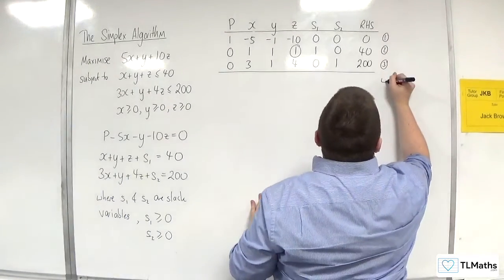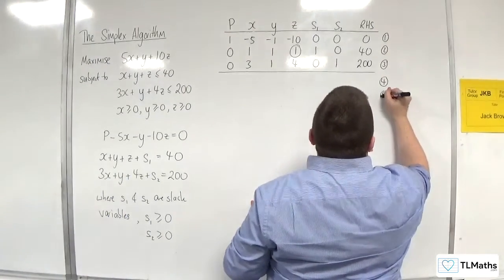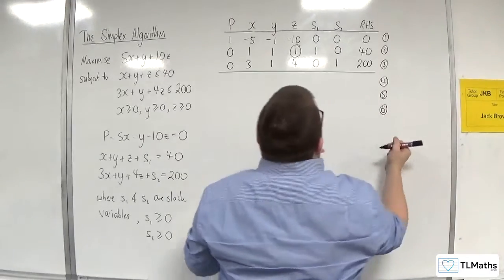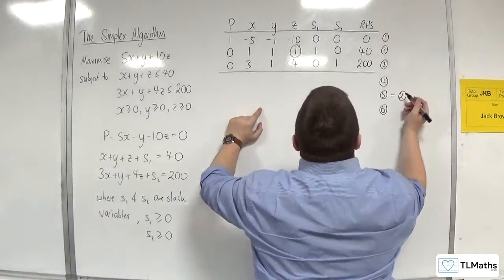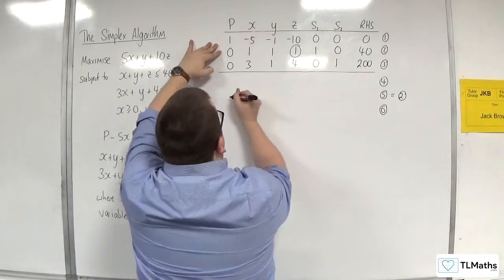So that means that row 2 is going to become row 5. And I don't need to do anything to it, so I can just copy that line down. So that's nice and easy.